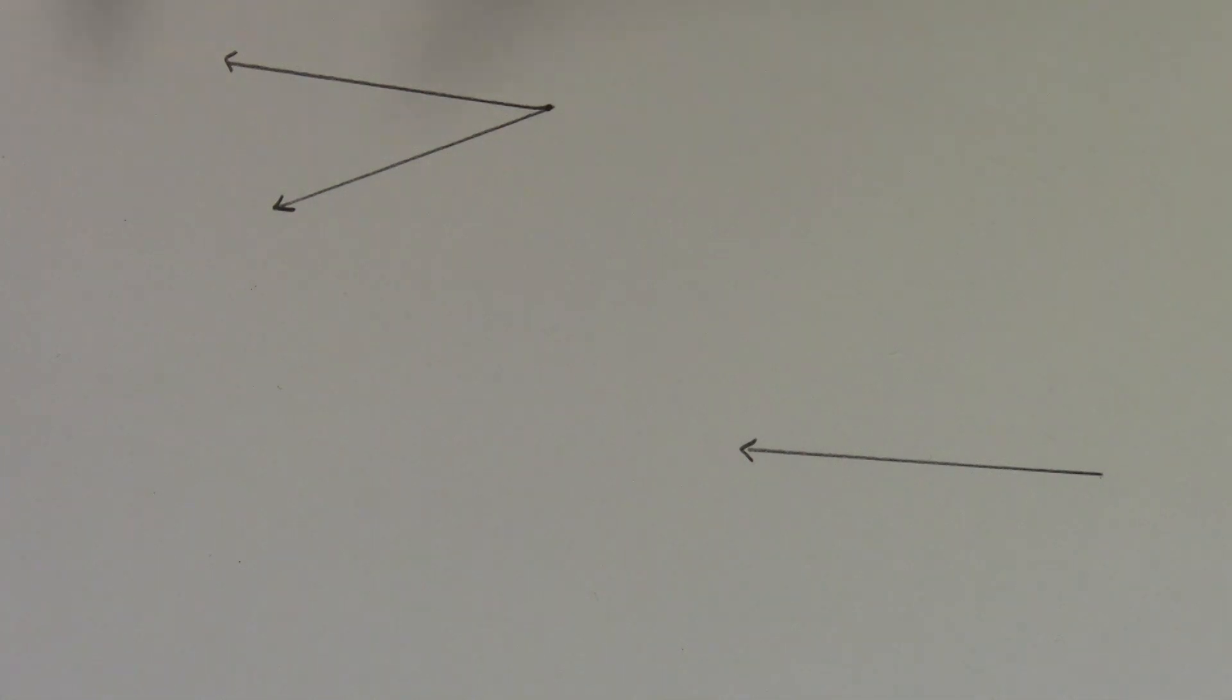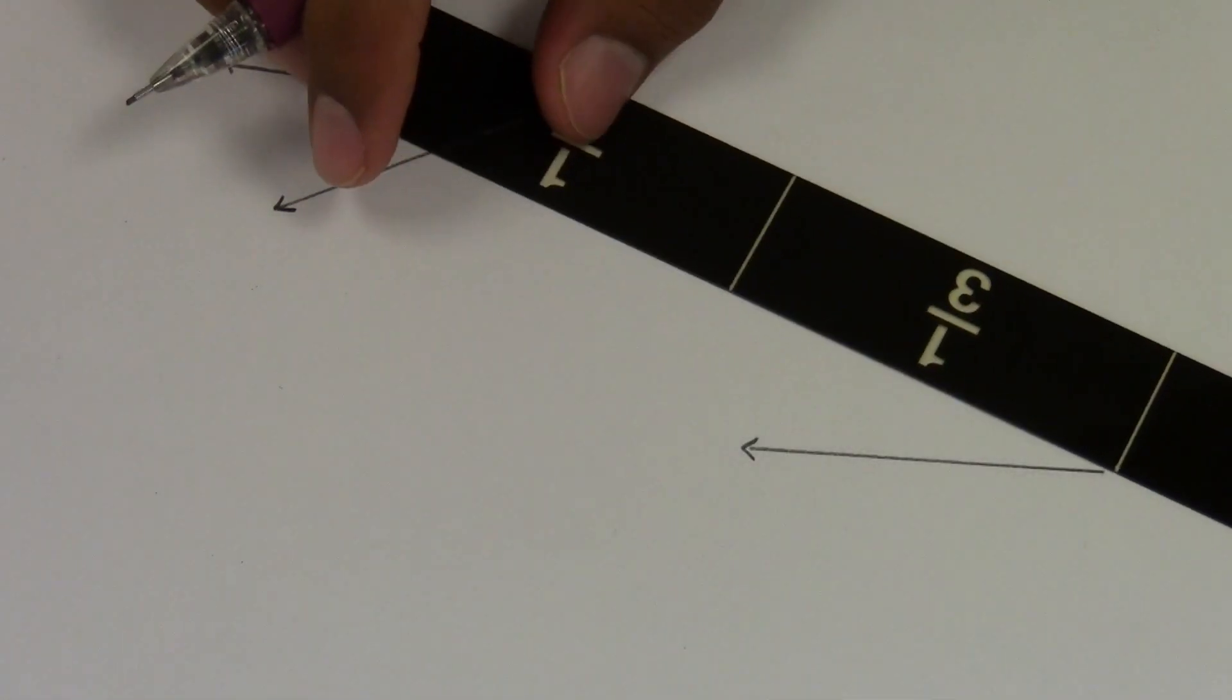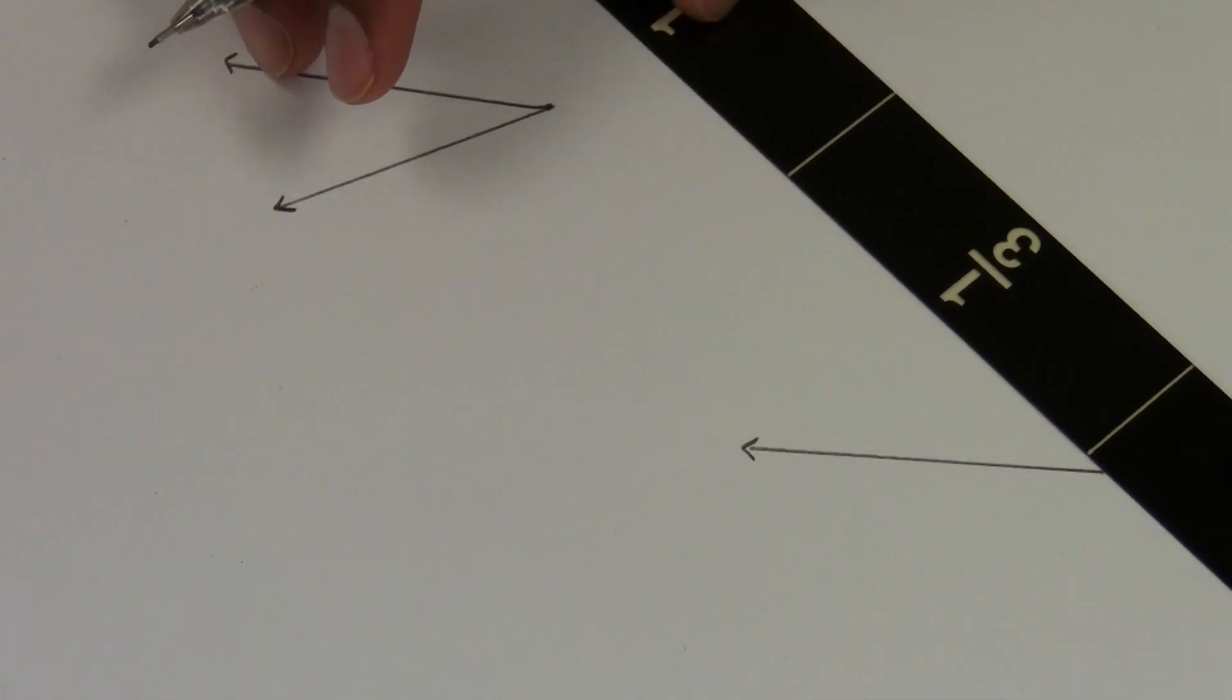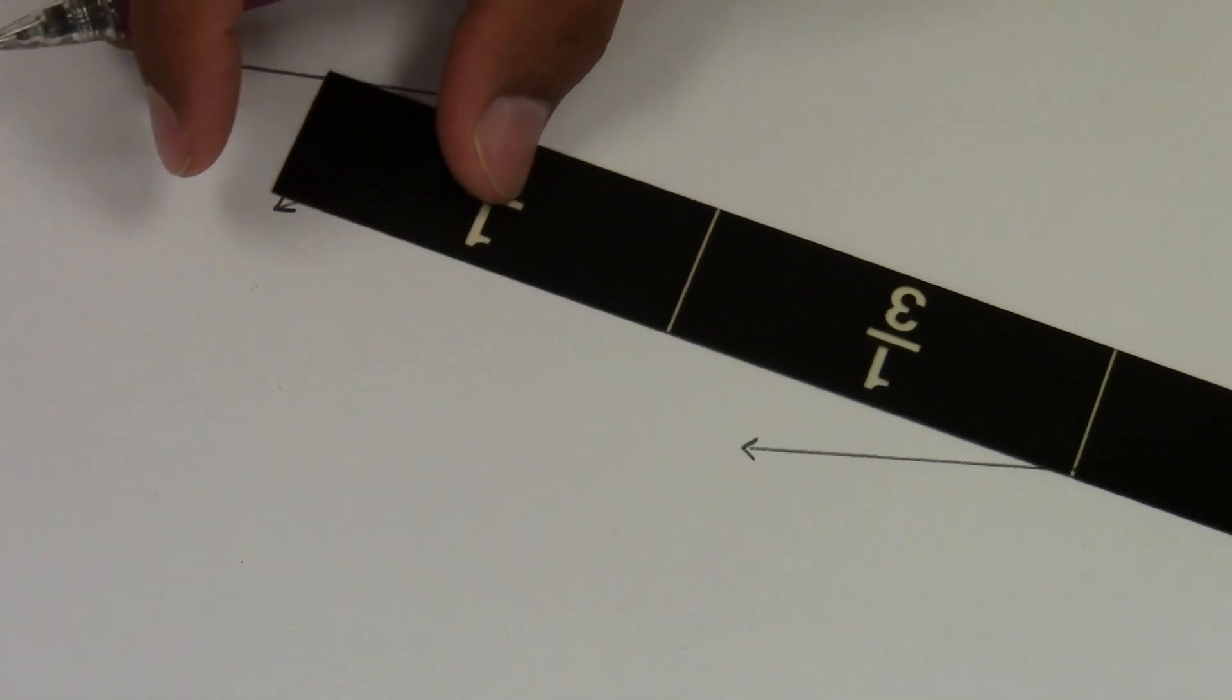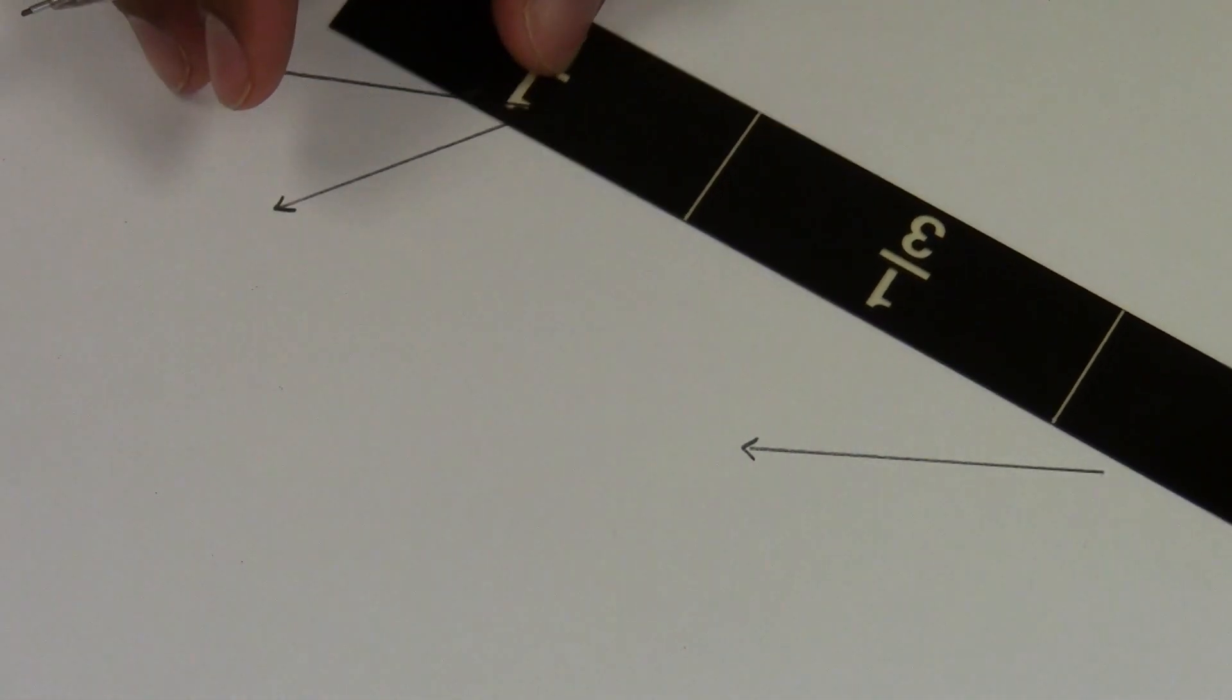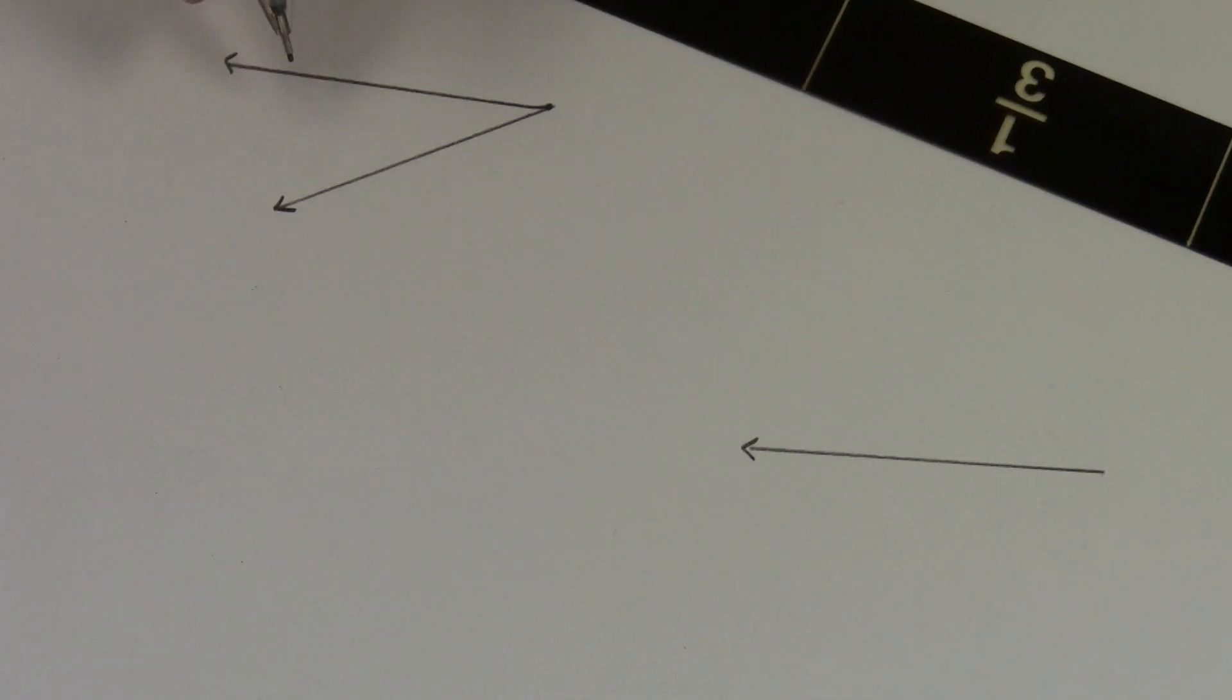Now when we think about this, the other ray - we don't exactly know how big to open it up. Could be here, could be here, could be here. And we're not just going to eyeball it. To duplicate it, it needs to be exact.